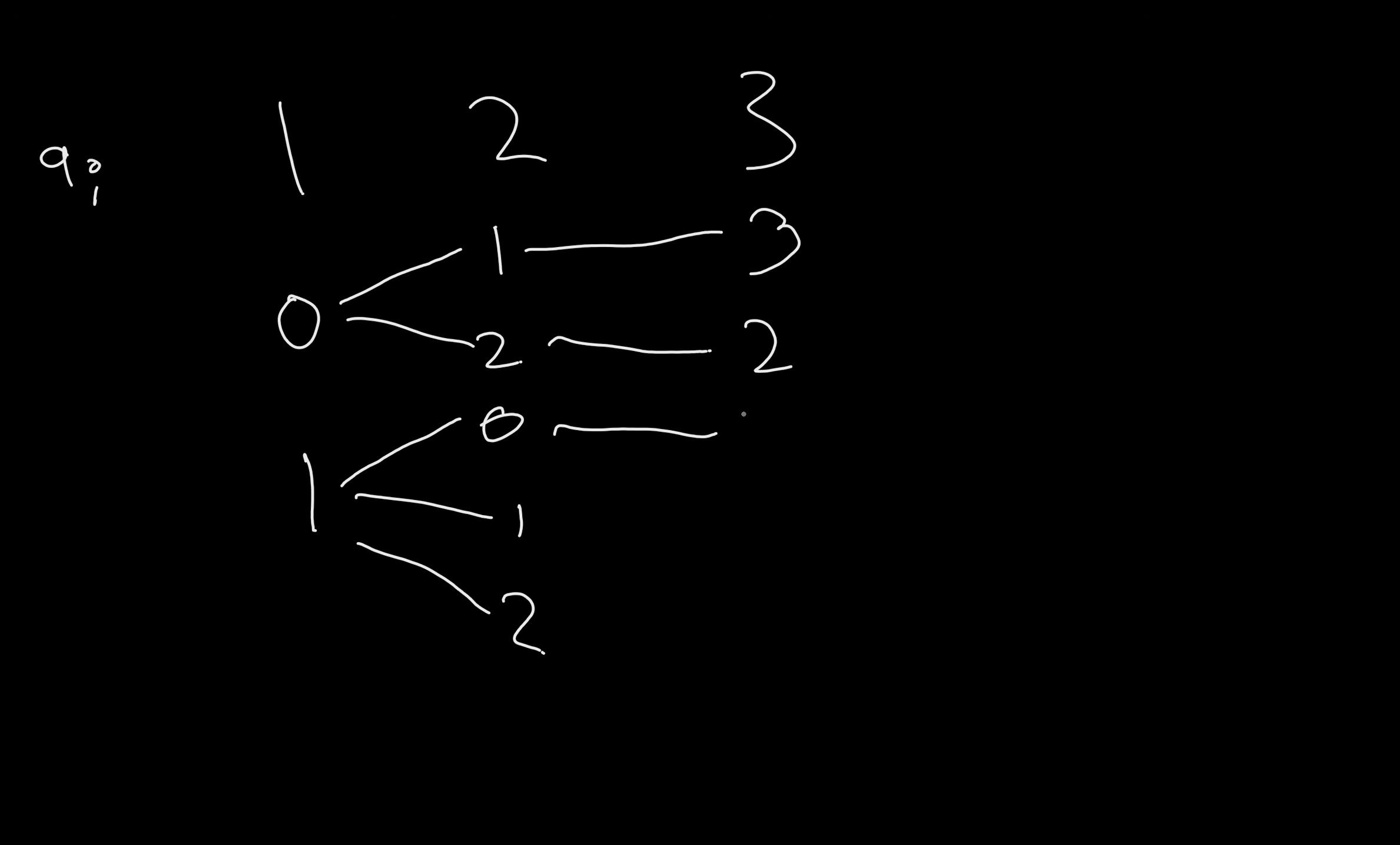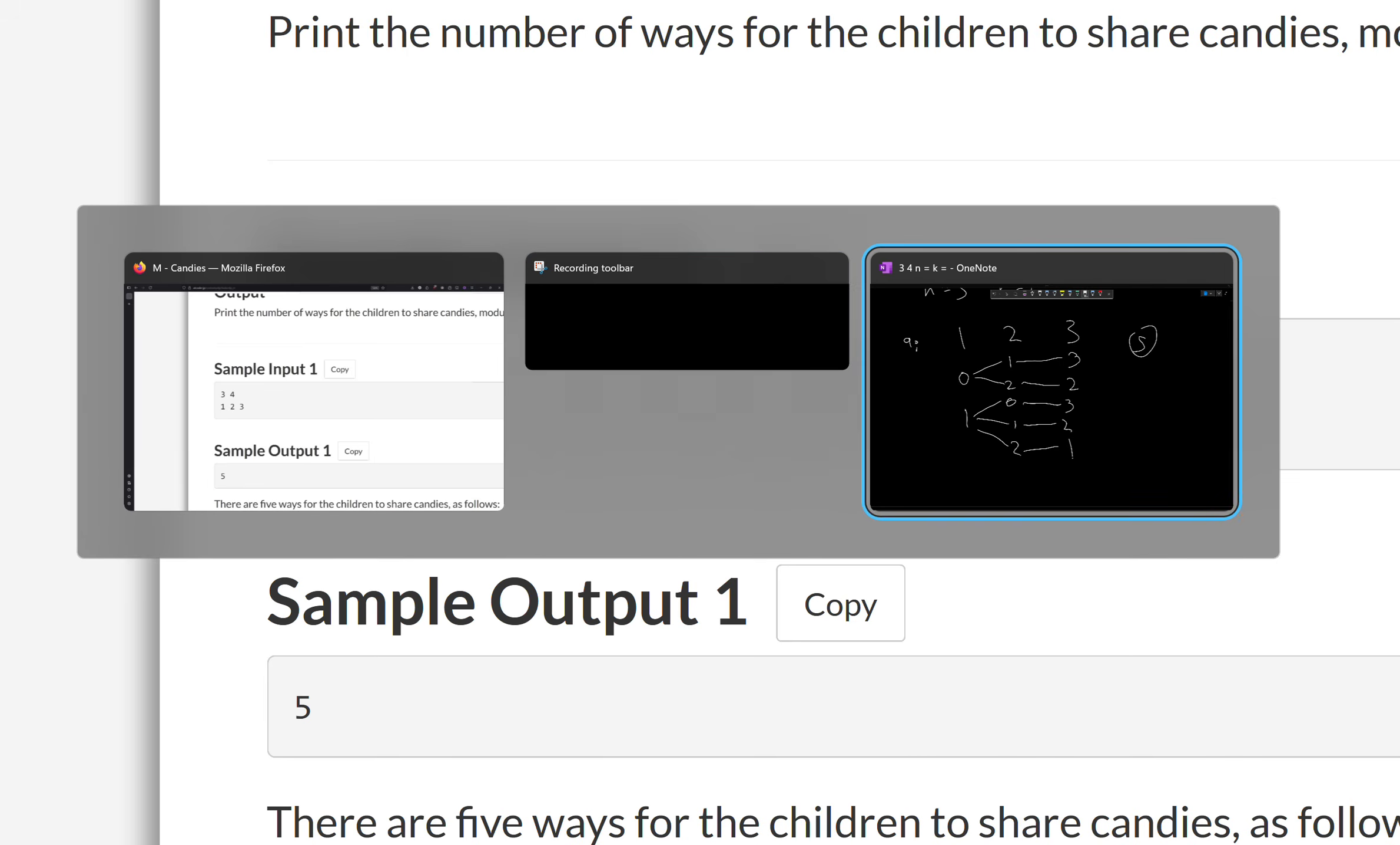So, here it would be three, here it would be two, and here they would take one. That is five different ways, and that exactly lines up with the solution.